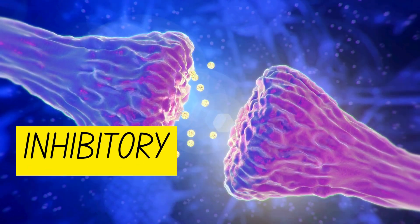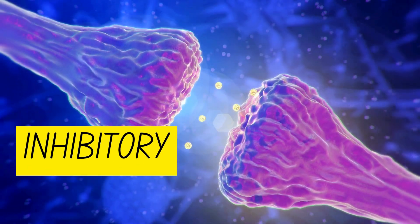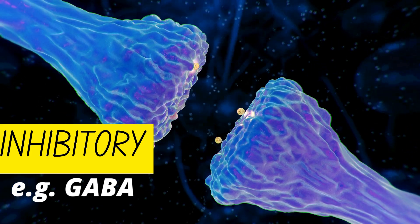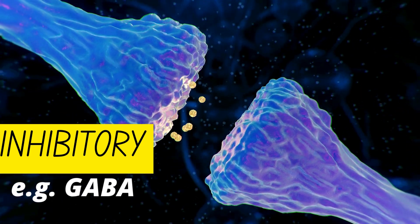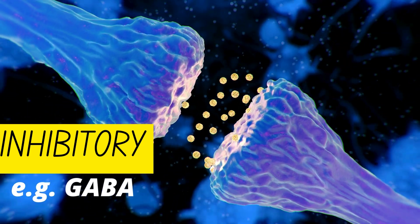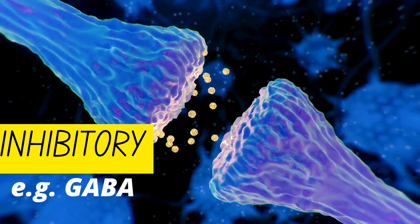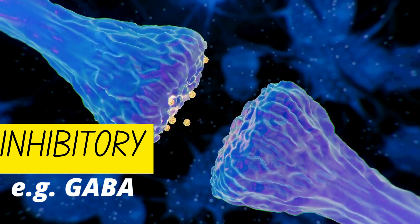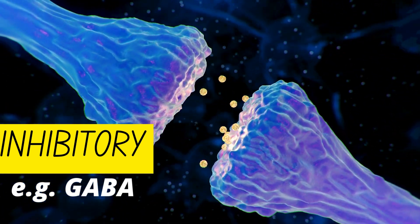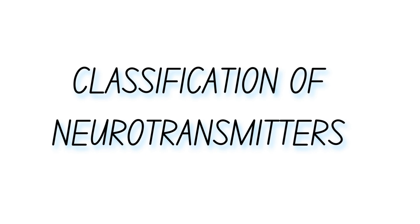Inhibitory neurotransmitters, on the other hand, are like the brakes in a car — they reduce the likelihood of a signal being passed along. Gamma-aminobutyric acid, GABA, is a key inhibitory neurotransmitter that helps calm the brain and prevent overstimulation. Mnemonic for GABA: GABA equals 'Go And Be At Peace,' as it helps calm the nervous system.